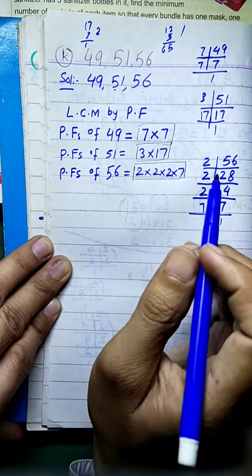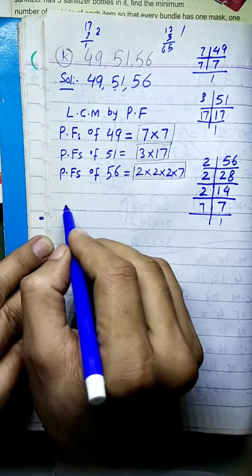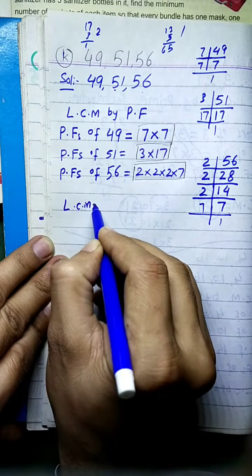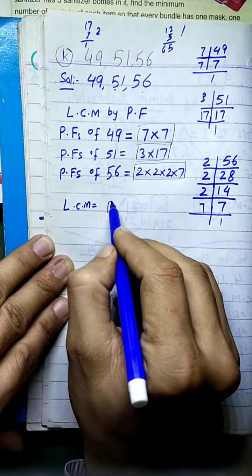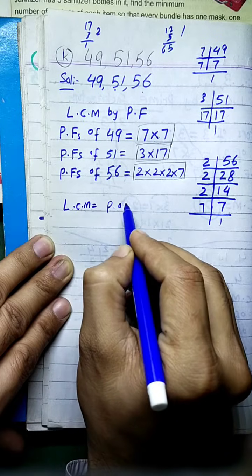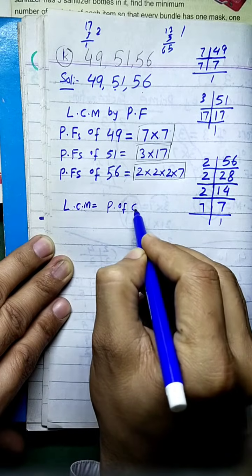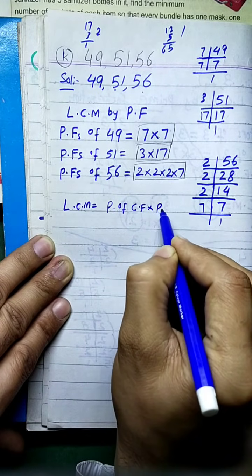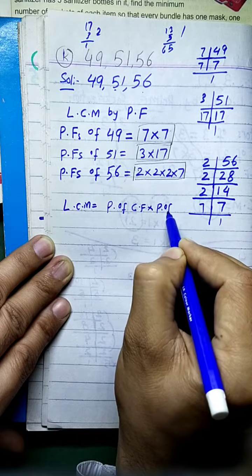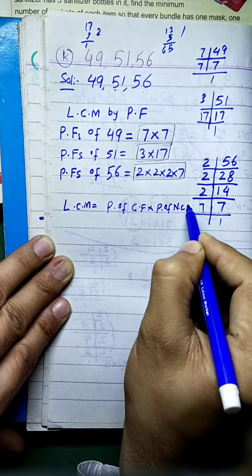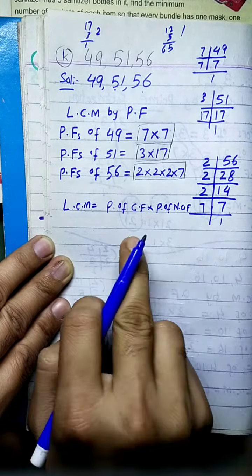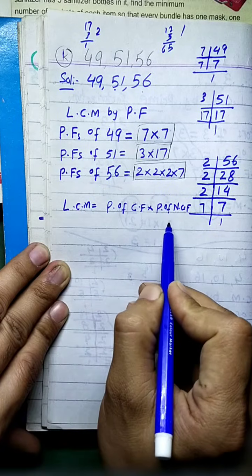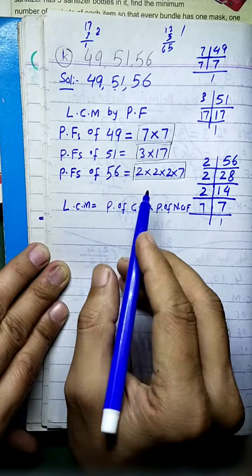To find LCM: LCM is equal to the product of common factors multiplied by the product of non-common factors.